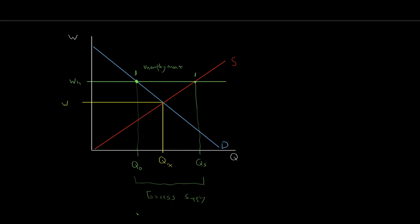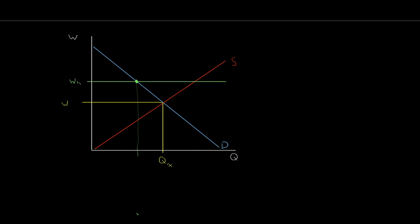Just like we had factors of supply and demand in our goods market, we're again going to have factors for supply and demand in our labor market. Let's talk about the demand curve first. The first thing that's going to influence how many workers we're demanding is what the producer's demand for output is. If they need to produce more stuff, they're going to need a higher demand for people in order to produce that extra quantity. So: more output, more demand for labor.